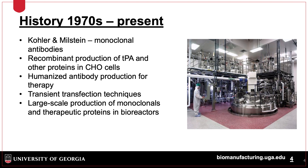Recombinant tissue plasminogen activator, or TPA, a treatment for stroke, and other proteins were expressed in CHO cells, and antibodies derived from mice were humanized for use in patients. In addition, transient transfection was established. As shown in the figure here, large-scale production of monoclonal antibodies and other therapeutic proteins at scales up to 20,000 liters was also established.